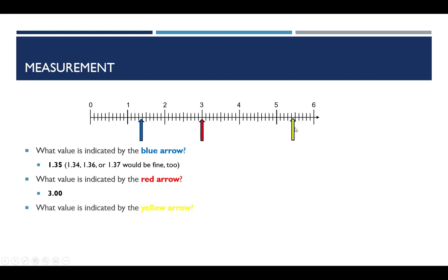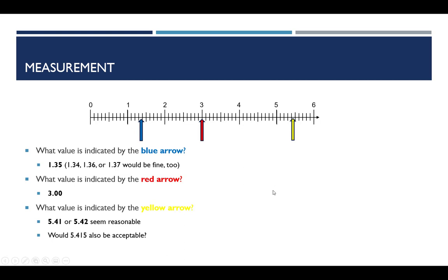And then the yellow arrow — it's definitely between 5 and 6, definitely between 5.4 and 5.5. Exactly how far along is a little bit difficult; it looks much closer to the 0.4 line, so I would tend to say 5.42. How about 5.415? You can't do that — you must go to the hundredths place. You don't get a choice on that. We must go to the hundredths place, and that tells us that the smallest marking was in the tenths place.